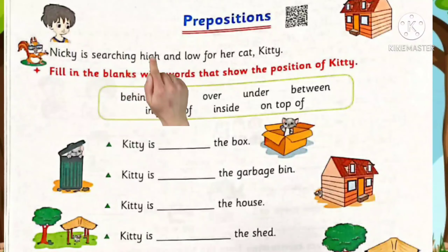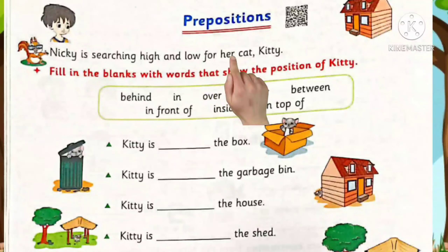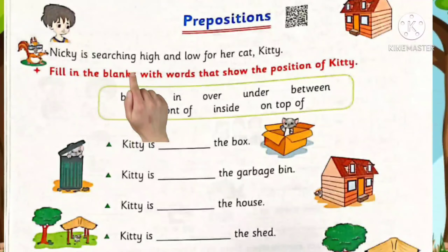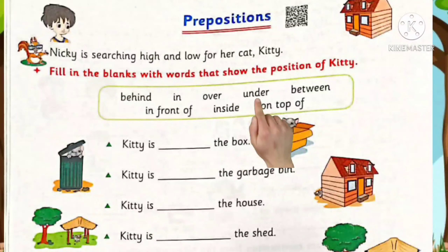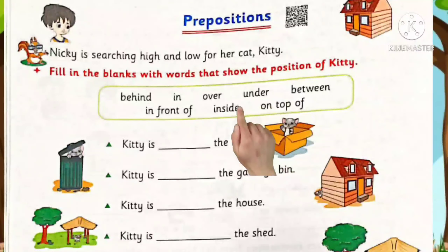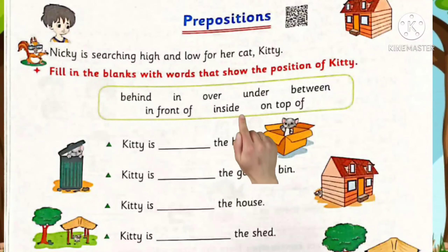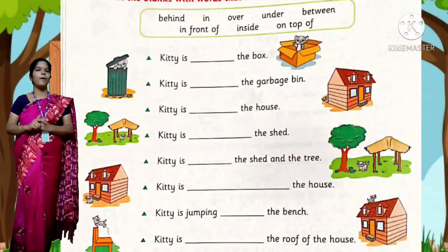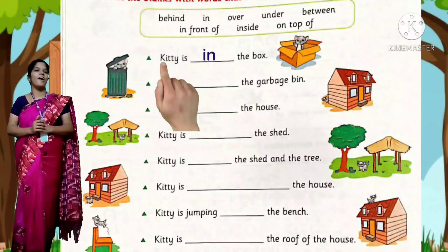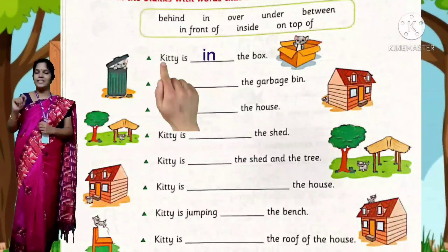Shall we do book page number 58. Nikki is searching high and low for her cat Kitty. Fill in the blanks with words that show the position of Kitty. The options are: behind, in, over, under, between, in front of, inside, on top of. First question: Kitty is ___ the box. Kitty is in the box.